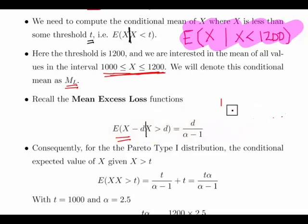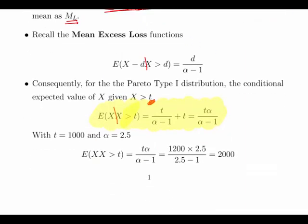What we need is the expected value of X given that X is greater than t. Here I'm changing it to t for threshold instead of d for deductible, just to get back to random variables rather than probability distributions.